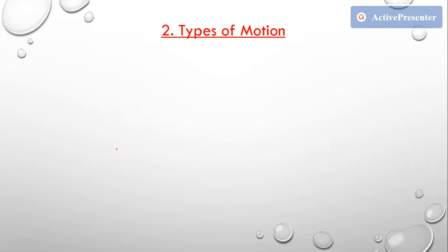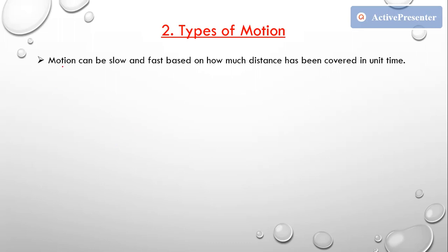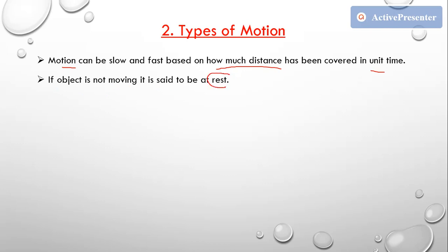Now let's move on to types of motion. Motion can be either slow or fast, and it depends on how much distance has been covered in unit time. If an object is not moving, it is at rest. But if that object covers a certain distance in a certain period of time, then it is in motion — slow or fast depending on distance covered per unit time.